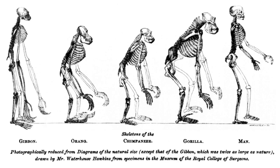A protocell is a self-organized, endogenously ordered, spherical collection of lipids proposed as a stepping stone toward the origin of life. A central question in evolution is how simple protocells first arose and how they could differ in reproductive output, thus enabling the accumulation of novel biological emergences over time, i.e. biological evolution. Although a functional protocell has not yet been achieved in a laboratory setting, the goal to understand the process appears well within reach.